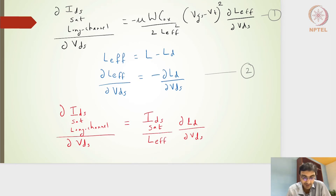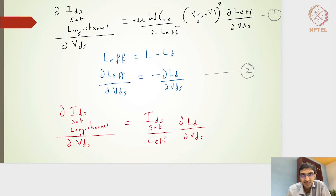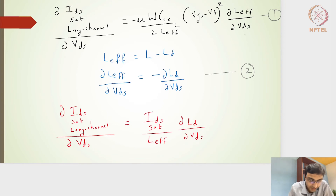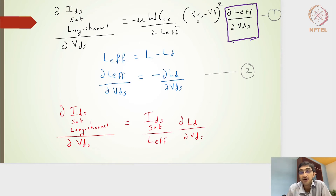We need an expression that accommodates the channel length modulation effect. The IDS saturation expression for the long channel case is used here for easy reference — the same approach applies to the short channel. IDS_sat for the long channel is (μ·W·C_ox)/(2L) × (VGS − VT)². Taking the first-order differentiation with respect to VDS, and noting that L_effective is now a function of VDS, we need to apply the chain rule.